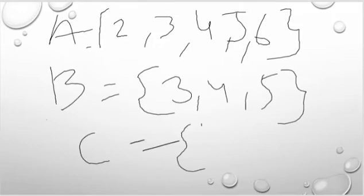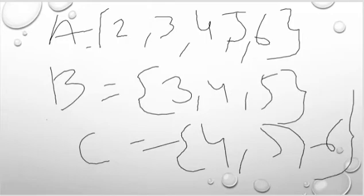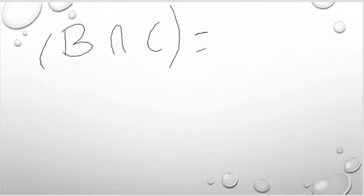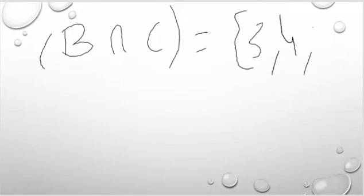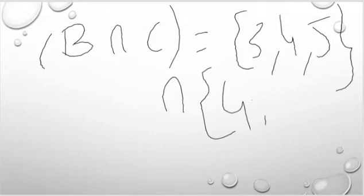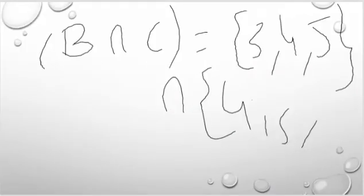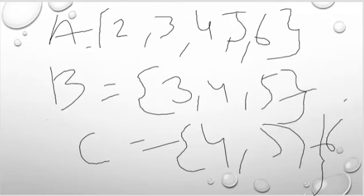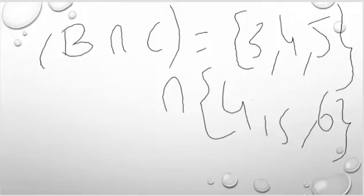The given data is A = {2,3,4,5,6}, B = {3,4,5}, C = {4,5,6}. Now B∩C equals {3,4,5} intersected with {4,5,6}, which gives us {4,5}.